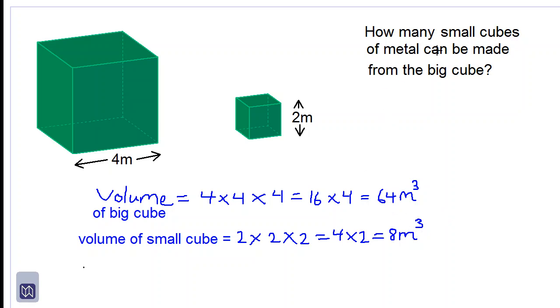The question asks how many small cubes of metal can be made from the big cube. We simply divide 64 by 8. So our answer would be equal to 64 over 8, and that would be 8 small cubes of metal.